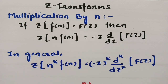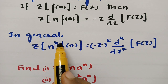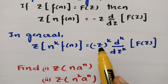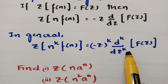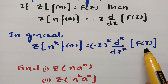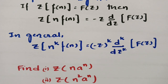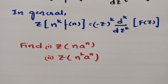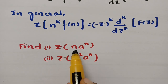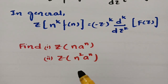In general, the Z-transform of nᵏ·f(n) is nothing but minus z raised to power k, times dᵏ/dzᵏ of capital F(z). Using this multiplication by n property, we have to solve: Z-transform of n·aⁿ.